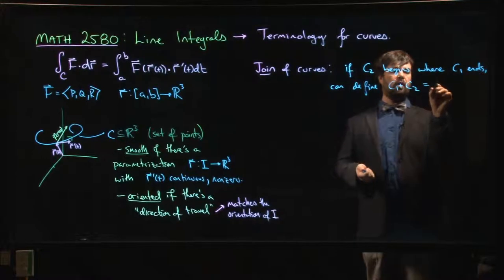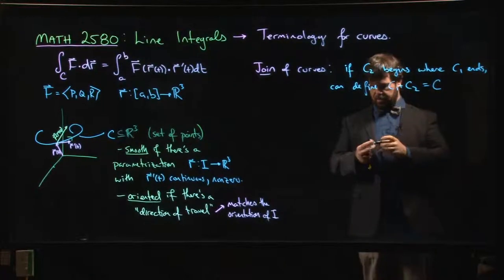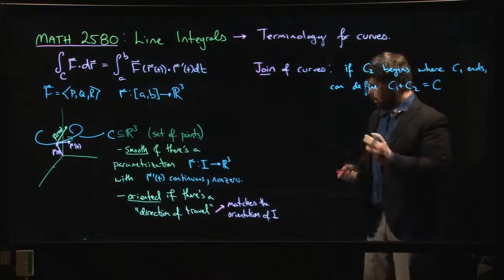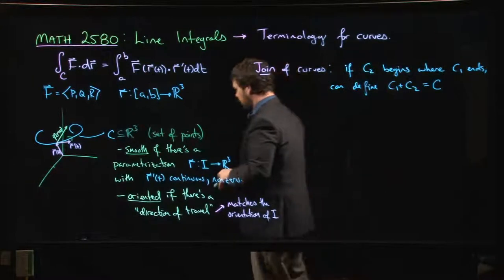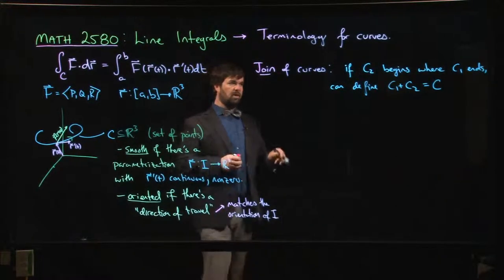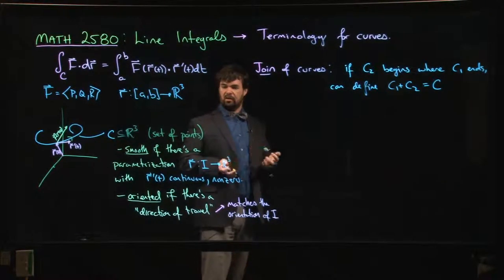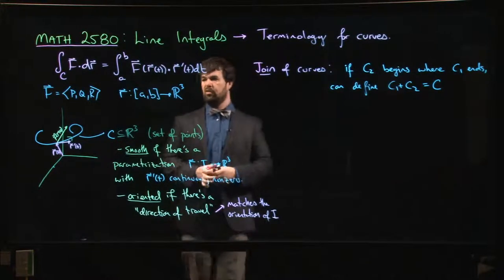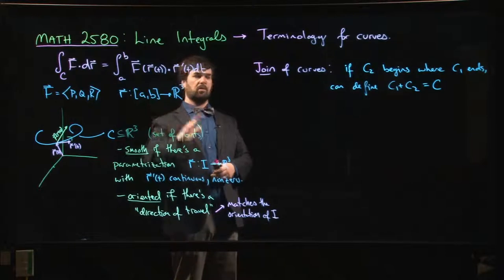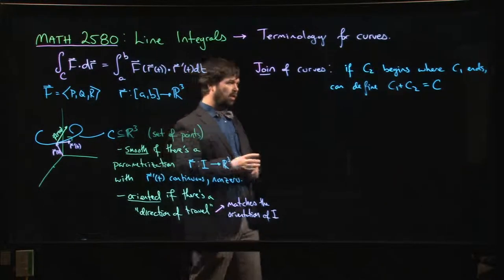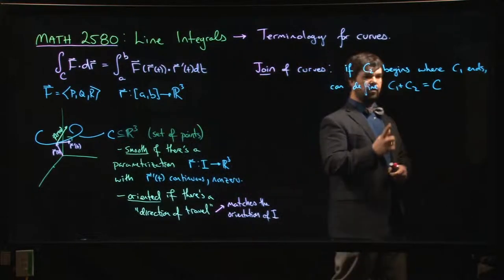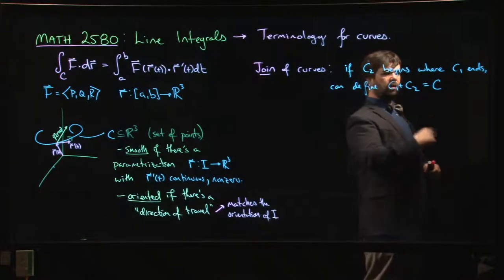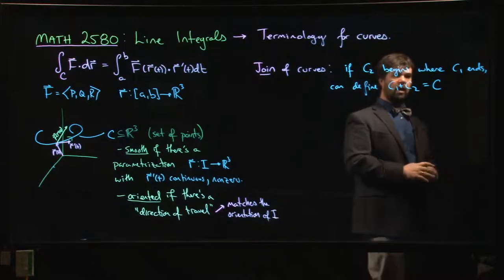We could define this as a curve C. And in other courses—not this course, we don't really worry about it here—but there are other contexts in which you might want to insist that, say, you always parameterize using the unit interval from 0 to 1, and then you'd have to worry about: okay, well this curve is parameterized from 0 to 1 and then this other curve is parameterized from 0 to 1.